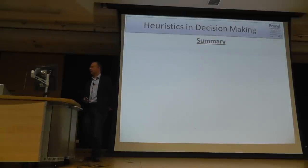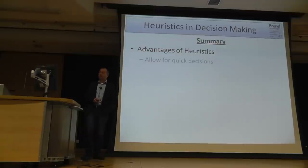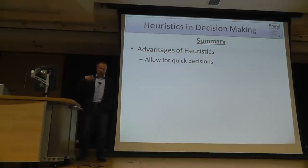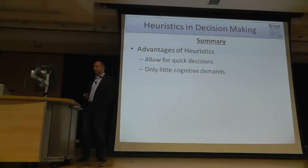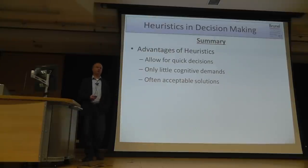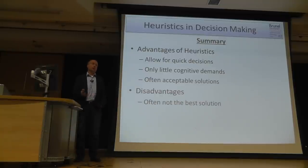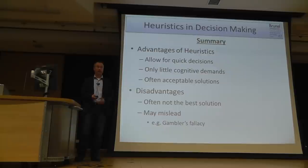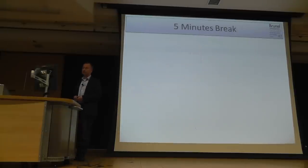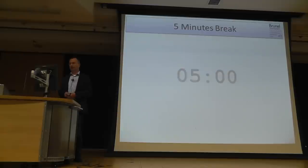To summarize the heuristics part: the advantage is that they allow quick decisions, requiring only small cognitive demands, and they often result in acceptable solutions for everyday living. The disadvantage — same as in problem solving — is that we often don't get the best solution and they may actually mislead us, like in the gambler's fallacy, which is a real problem for those people.